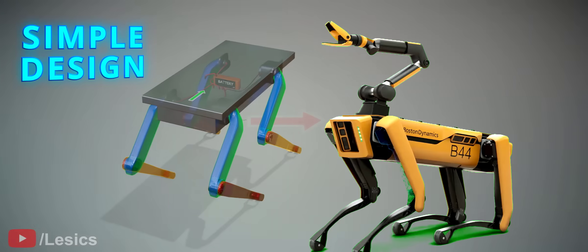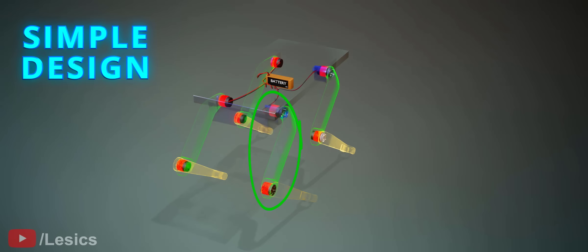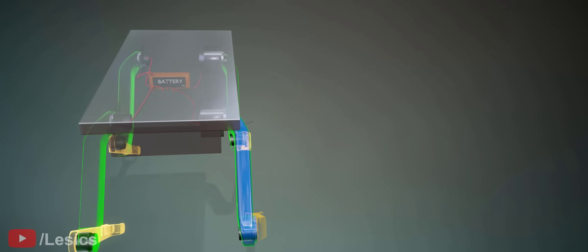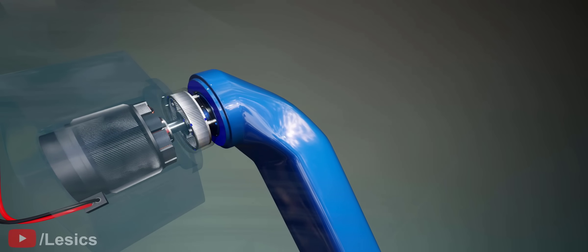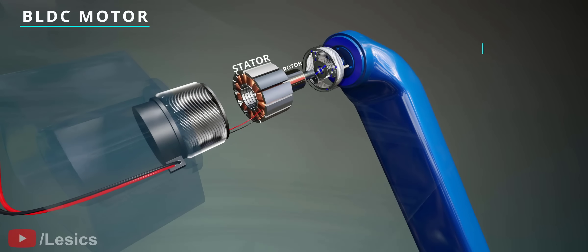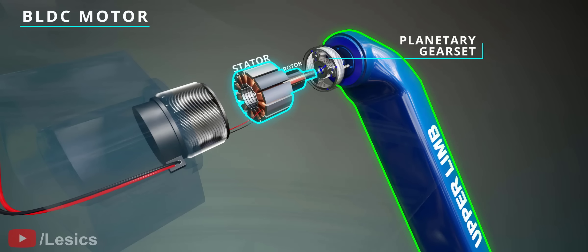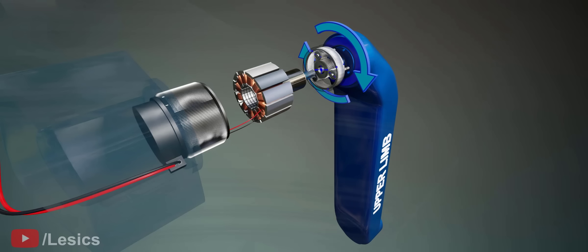In this simple Spot design, each leg obviously needs two motors for its operation. These visuals clearly show the details of the motor connection at the hip joint. A planetary gear set is used between the motor and upper arm for torque multiplication. You can see how it operates the upper limb when you power the motor.